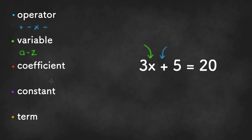Coefficients are any number that's being multiplied to a variable. The three right over here is being multiplied to the variable x, and is therefore the coefficient.